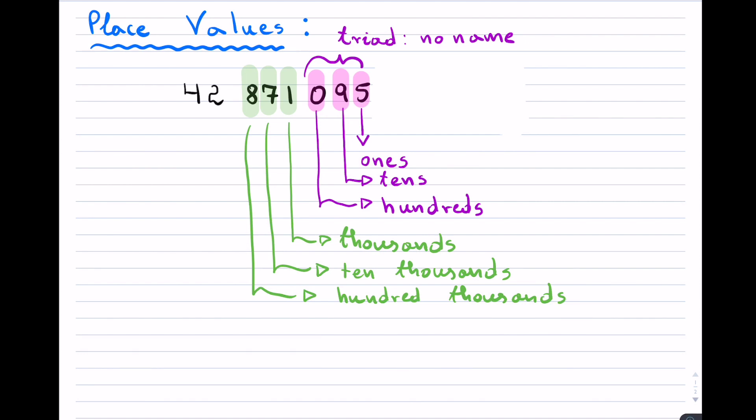And that particular triad is known as the thousands. And you will notice the reason is because all the place values include the word thousands. So that's the thousands triad.